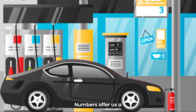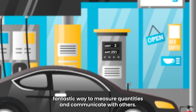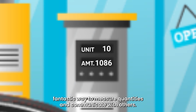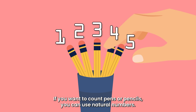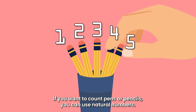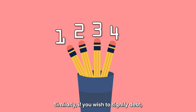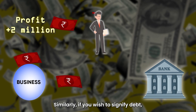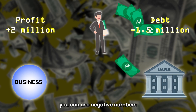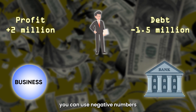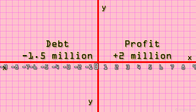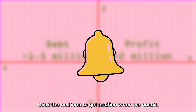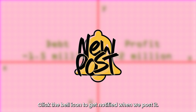Numbers offer us a fantastic way to measure quantities and communicate with others. If you want to count pens or pencils, you can use natural numbers. Similarly, if you wish to signify debt, you can use negative numbers. We are coming up with a video on natural and negative numbers too — click the bell icon to get notified when we post it.